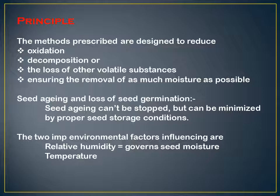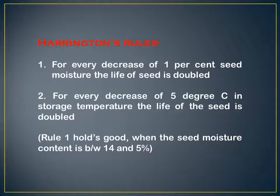Seed aging and loss of germination — seed aging cannot be stopped but can be minimized by proper seed storage conditions. Two important environmental factors are relative humidity, which governs seed moisture, and temperature. This gives us Harrington's Rule: for every decrease of one percent seed moisture, the life of the seed is doubled. Similarly, for every decrease of five degrees centigrade in storage temperature, the seed life is also doubled. This rule holds when seed moisture is between 5 and 14 percent.